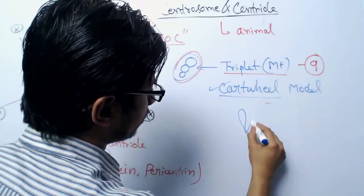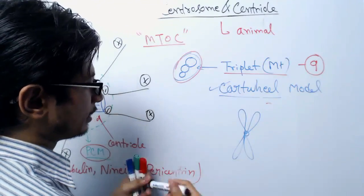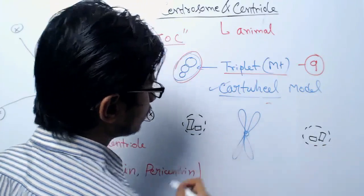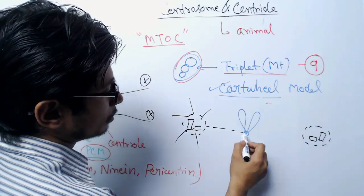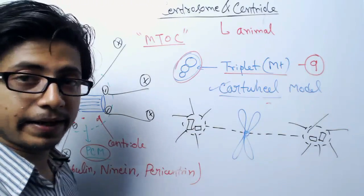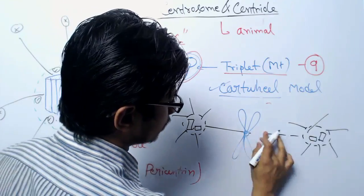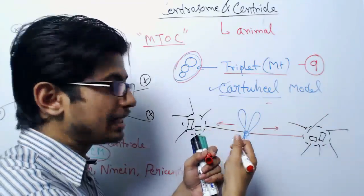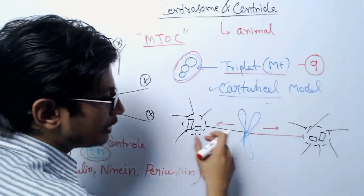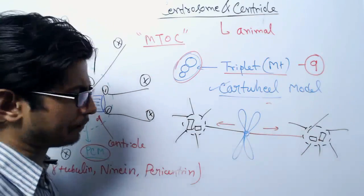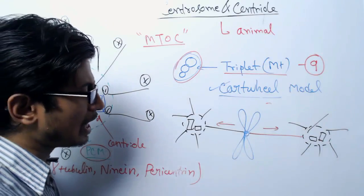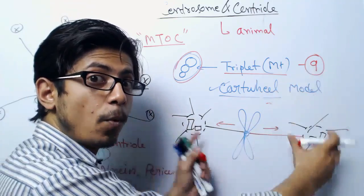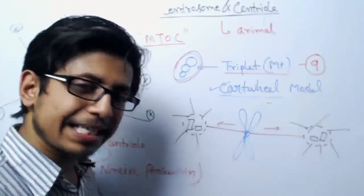To explain how chromosomes are separated: the chromosomes have already been duplicated, and centrosomes are present producing microtubules that try to grab the chromosomes at the kinetochore region. One set grabs one chromatid and the other set grabs the other, then they drag them in opposite directions to separate the sister chromatids. Other motor proteins like kinesin and dynein also help in this dragging process.